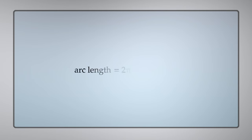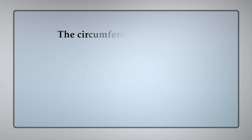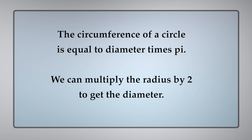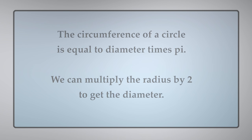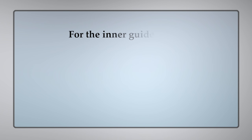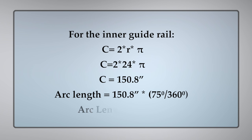The arc length equals the circumference of the circle times the degree of the turn divided by 360 degrees. The circumference of a circle is equal to diameter multiplied by pi. We can multiply the radius by 2 to get the diameter. After plugging in the values, the arc length comes out to be 31.42 inches.